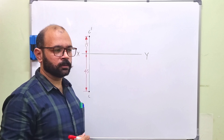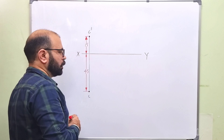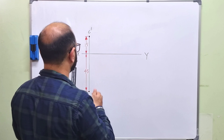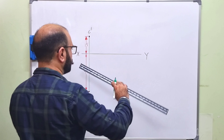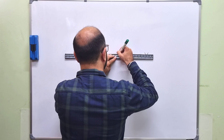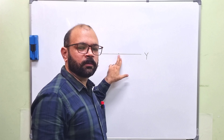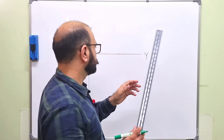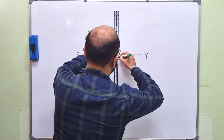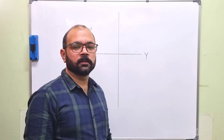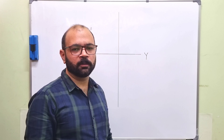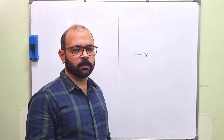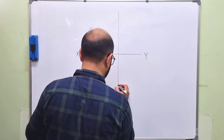Now let us draw the projections of point D. The projectors through C and D are 40mm apart, so at a distance of 40mm we start drawing the projections of point D. We draw a vertical projection line extending towards the top and the bottom. Point D is 40mm in front of VP, so the top view will be drawn 40mm below the XY line.